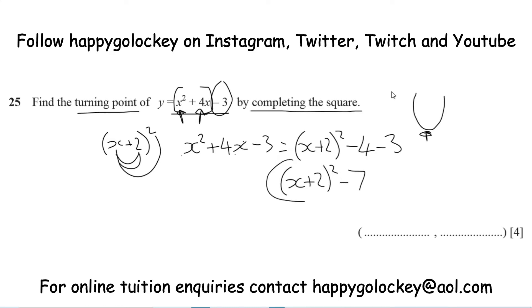So completing the square gives a final answer of x plus 2 squared, take away 4, take away 3, which is take away 7. That is exactly the same graph as the original. There are two marks for that first bit — one for getting the x plus 2 squared, and one for finding the minus 7.